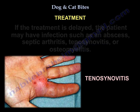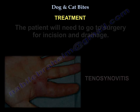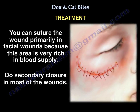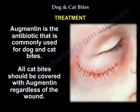The patient may need to go to surgery for incision and drainage. You can suture the wound primarily in facial wounds because that area is very rich in blood supply; use secondary closure in most other wounds. Augmentin is the antibiotic commonly used for dog and cat bites. All cat bites should be covered with Augmentin regardless of the size of the wound.